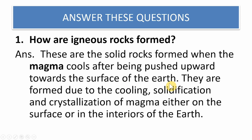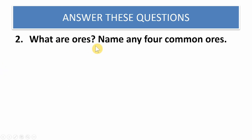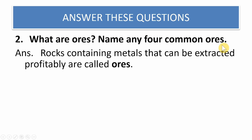For example, in a volcanic eruption, molten magma comes out — this is also called lava. When this molten magma solidifies and cools over a period of time, it forms igneous rocks.